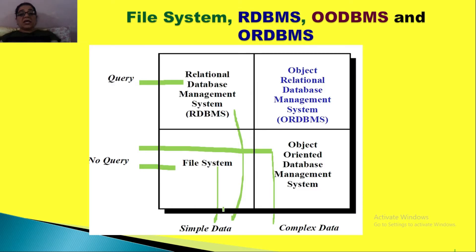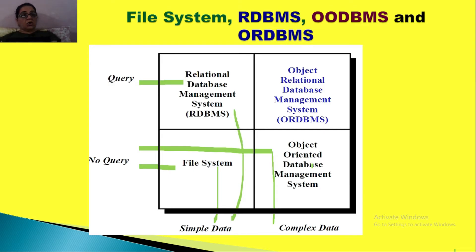There was a big problem with relational database management systems — they could not handle images, audio, videos, and such kinds of data. This was the problem with RDBMS. Now, if we talk about the object-oriented database management system, it could handle audio, video, and multimedia, but could not handle concurrent multiple transactions, which RDBMS could handle.